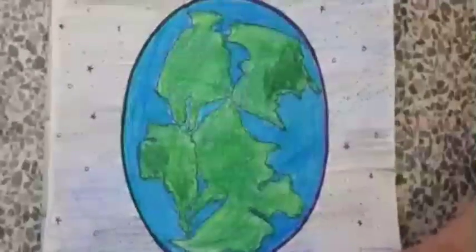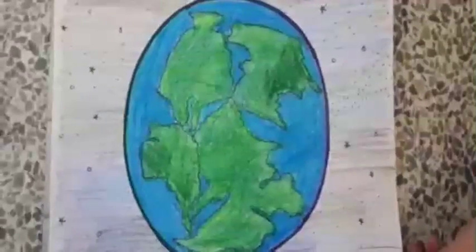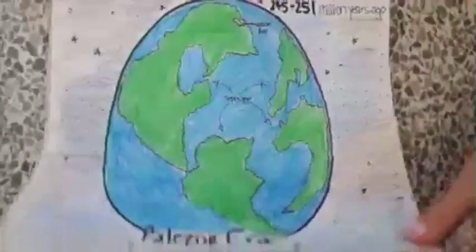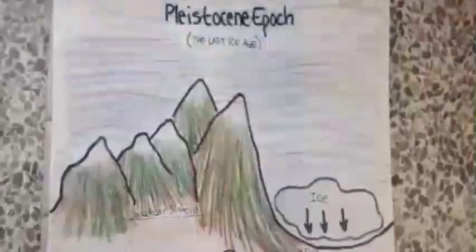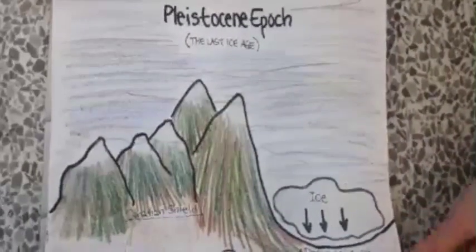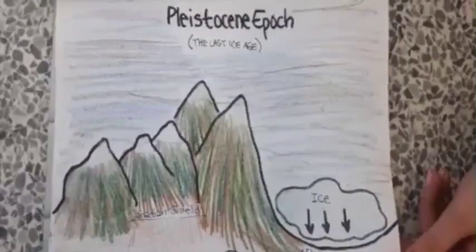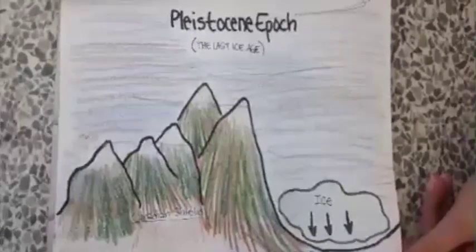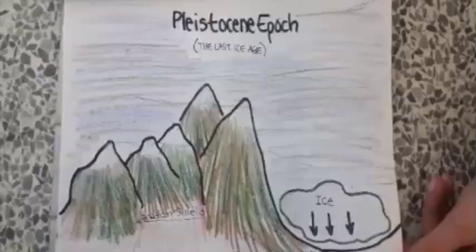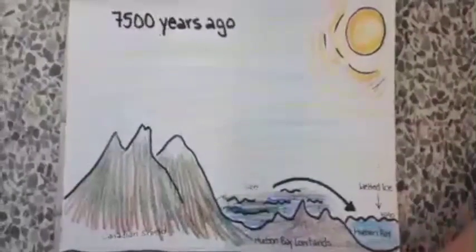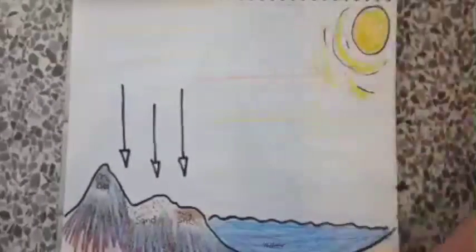The Hudson Bay lowland region first started to form during the Paleozoic era when the breakup of the supercontinent Pangea occurred. When the Pleistocene epoch, also known as the last ice age, ended 11,700 years ago, the glacier ice of the Hudson Bay started to melt. A depression formed in the Canadian Shield due to the heavy ice started to melt as well. The water retreated down the lowlands to the bay, carrying along silt, sand, and clay, which over the years were compressed into sedimentary rocks.